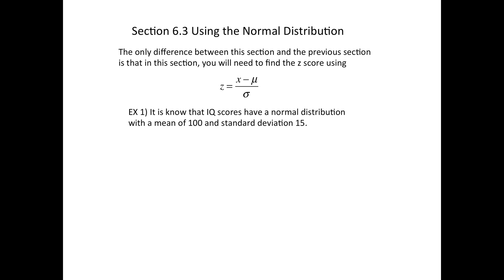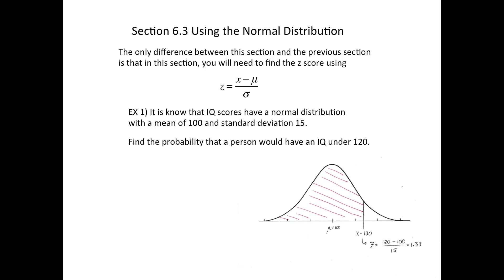For example, IQ scores have a normal distribution where mu equals 100 and sigma equals 15. Find the probability a person is going to have an IQ under 120. Draw the normal distribution — the mean of 100 is in the middle, the score of 120 is to the right, and the shading goes to the left under that value. Next, we apply the z-formula and end up with z equals 1.33.